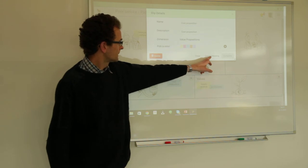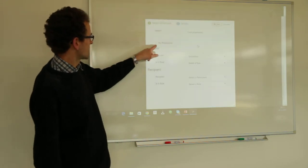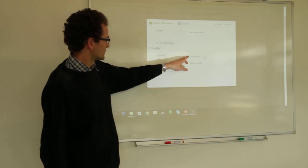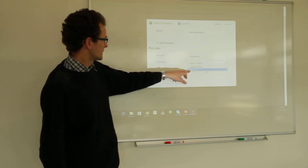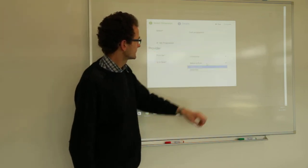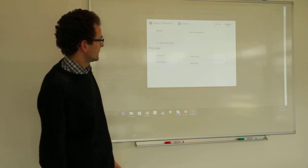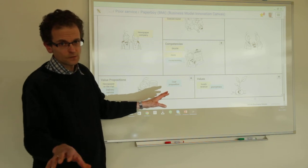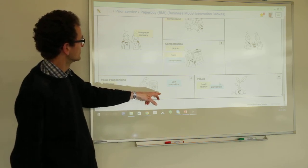We map the cost proposition right away, just as we mapped all the other ones. We flag it and check it as my proposition. The provider is the schoolboy in the role of paperboy.